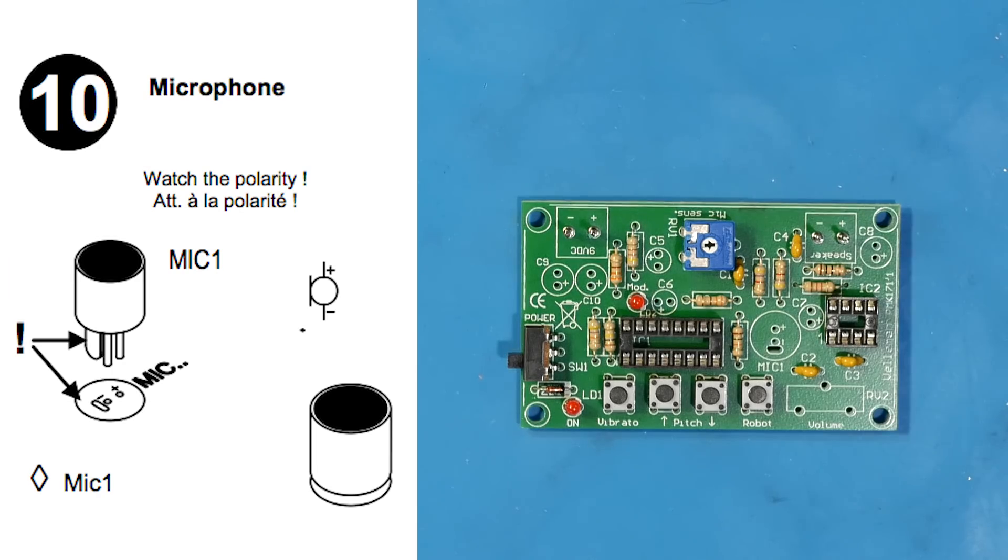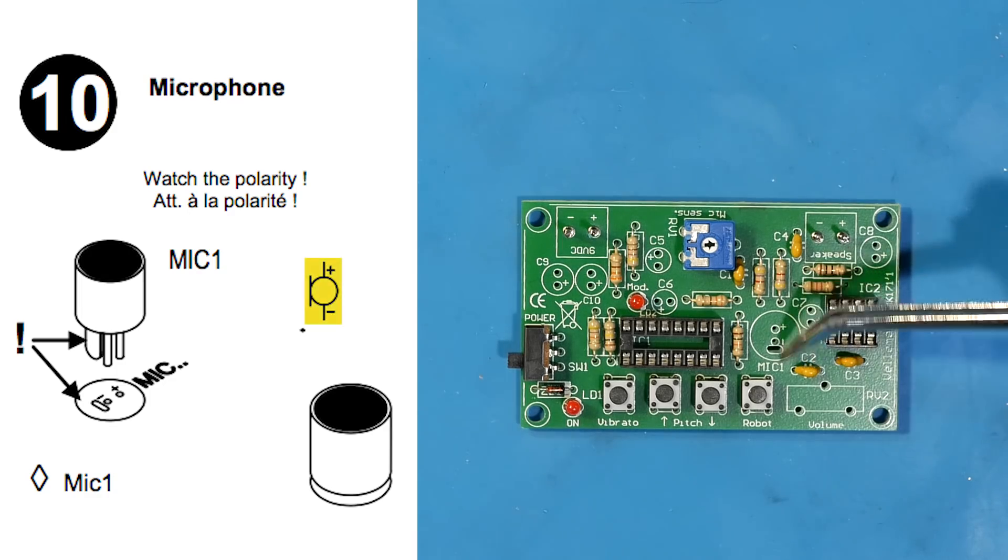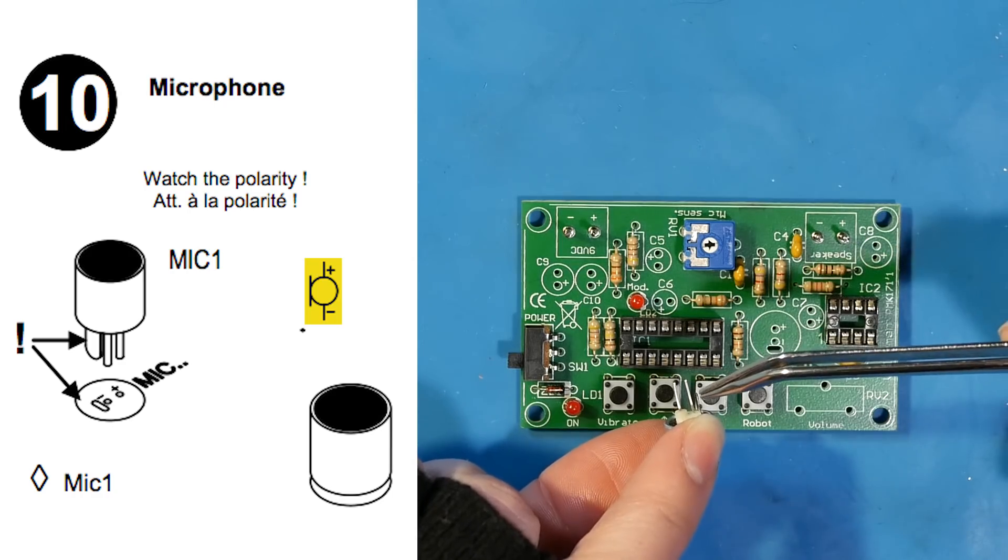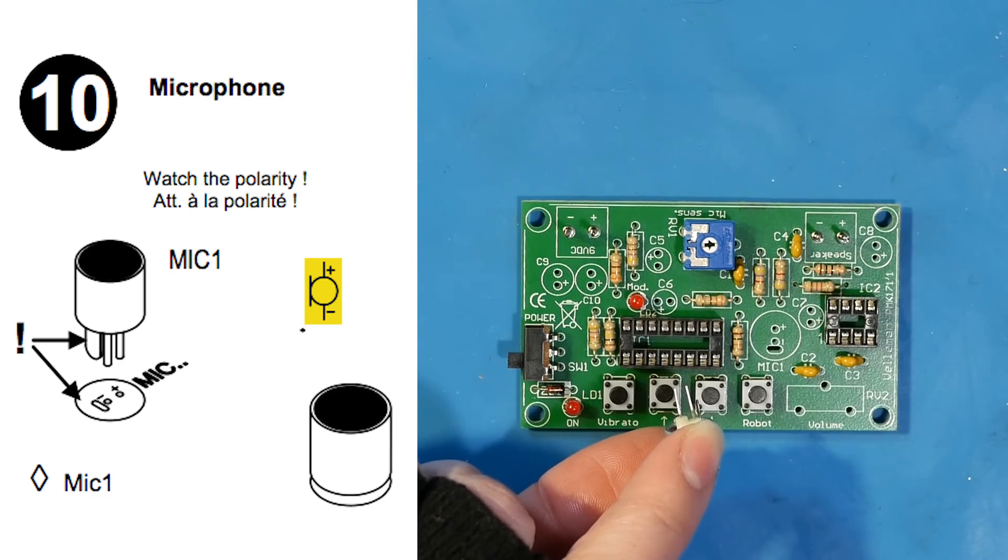In step 10, we place our microphone. You're going to want to find mic 1 on the PCB. Looking at both the symbol and the placement on the board, we can see that there's a polarity. Luckily, the microphone comes with a small tab, so it can only be placed in one direction.